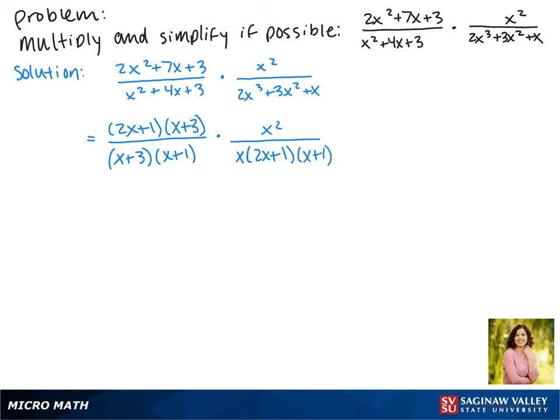Now we're ready to cancel out common factors. So there's an x + 3 in the numerator and in the denominator. There's also a 2x + 1. And here there's an x² and an x. So one of the factors of x² will cancel, leaving us with just an x. And the x in the denominator will cancel completely.